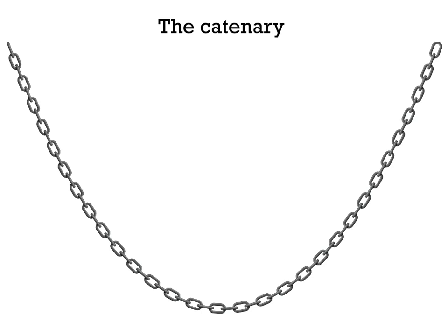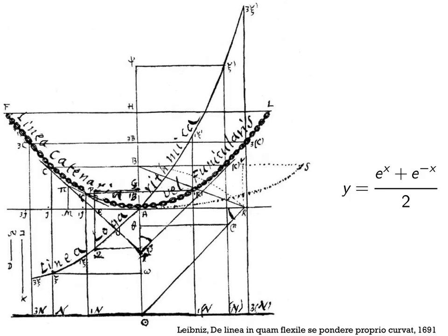So here we have the catenary, the shape of a hanging chain. This was a problem studied in depth in the late 17th century with one of the earliest applications of the calculus to determine and describe this curve. Here is a figure from Leibniz's article on this from 1691. So he has drawn here the linea catenaria, the line of the chain or rope. And he has even drawn the little links, so you can see it very clearly there.